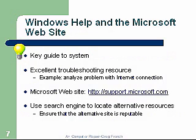Key guide to the system — excellent troubleshooting resource. This is the Windows Help and the Microsoft website — very important troubleshooting help. For example, you can analyze problems with the internet connection. Use the search engine to locate alternative resources. I like to use Google. Google is my primary troubleshooting tool. Using Google, I can find information concerning any problem I ever run into, and it's all documented and current on the internet. Google is a very, very important tool.